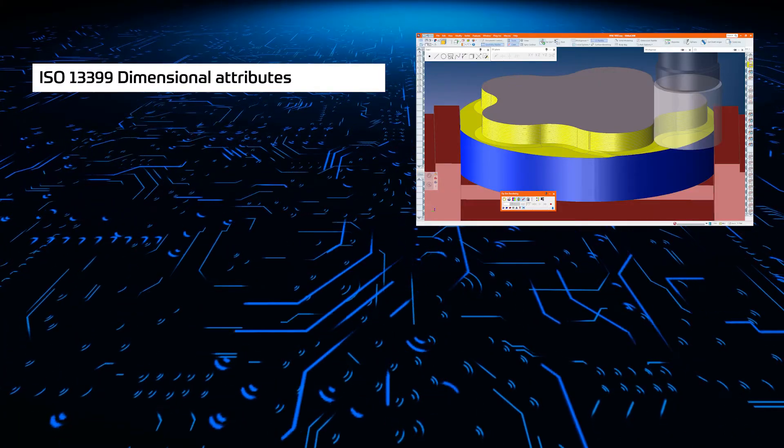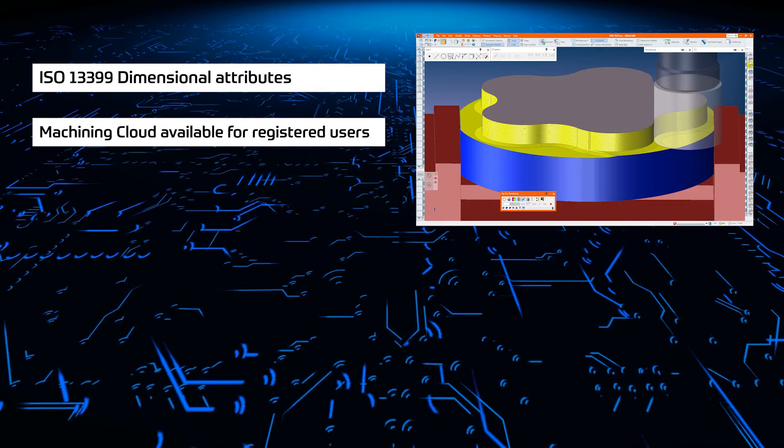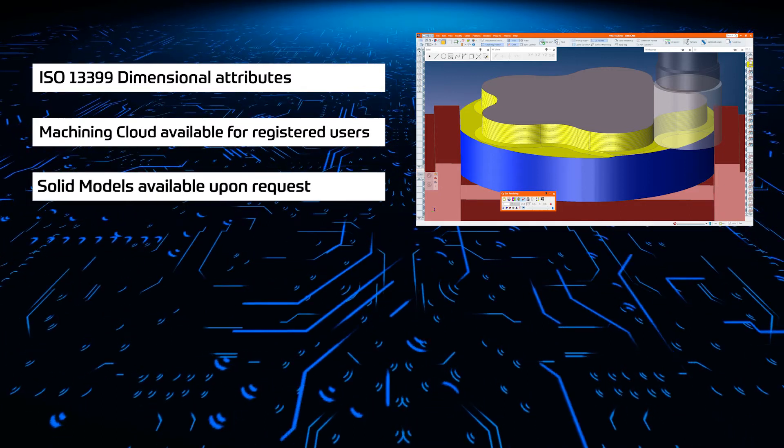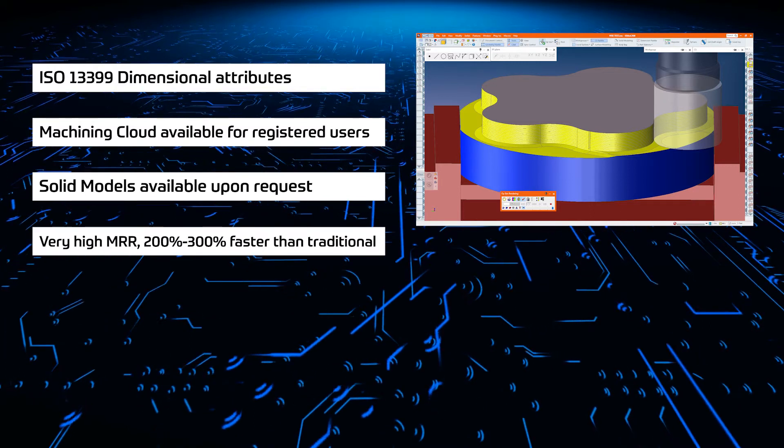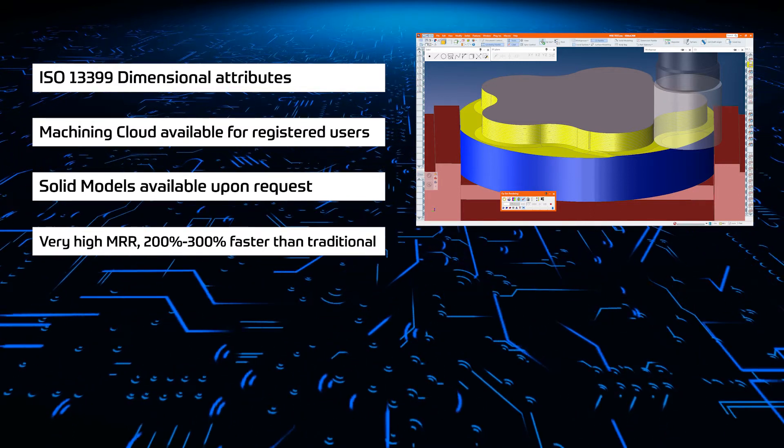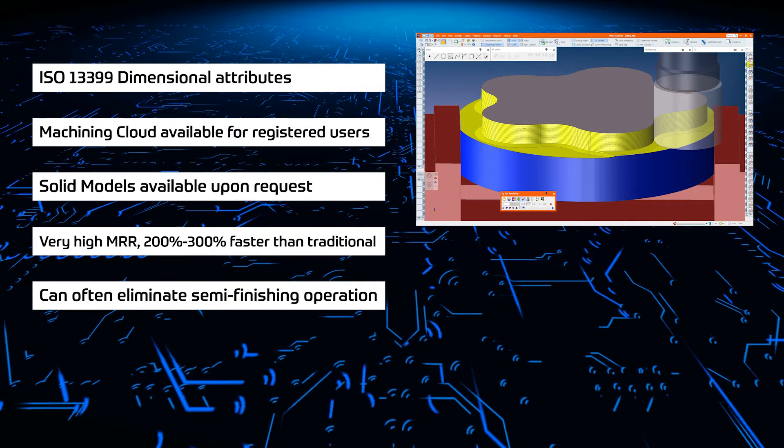ISO 13399 dimensional attributes. Machining cloud available for registered users. Solid models available upon request. High MRR with 200 to 300 percent faster than traditional milling. Can often eliminate semi-finishing operations.